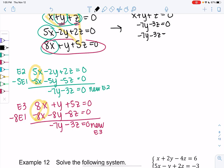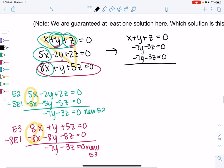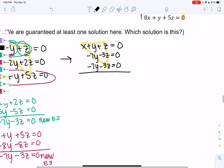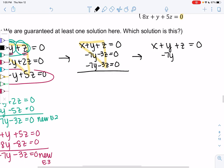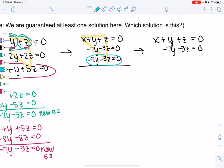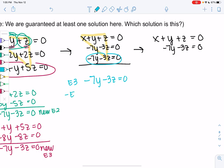We have a system, almost a triangle. We need to eliminate y in E3. My new system: x plus y plus z equals zero, minus 7y minus 3z equals zero. E3 is minus 7y minus 3z equals zero. I'll subtract E2. Plus 7y plus 3z equals zero. The y eliminates and we get 0z equals zero for my new E3.